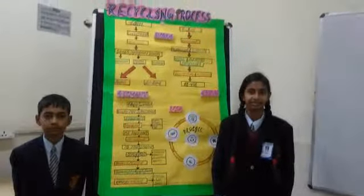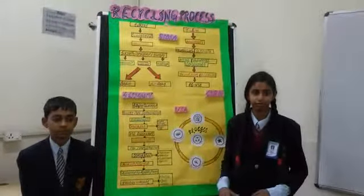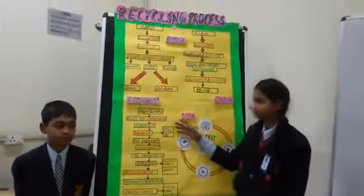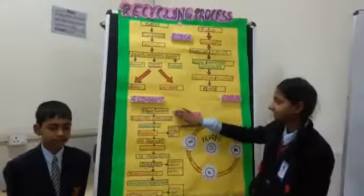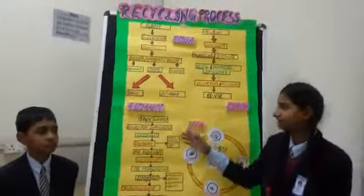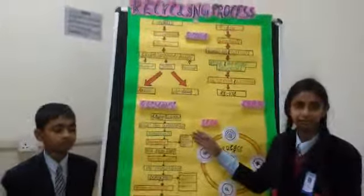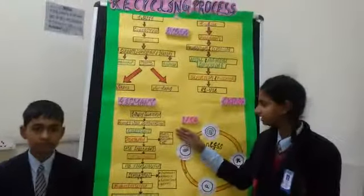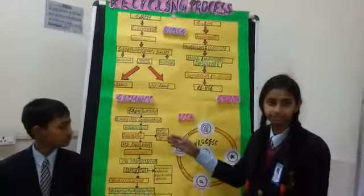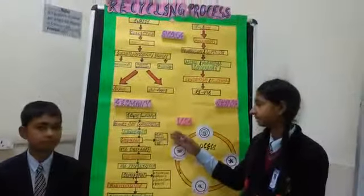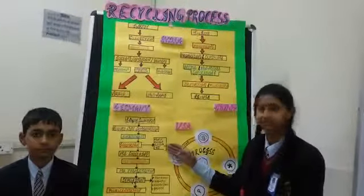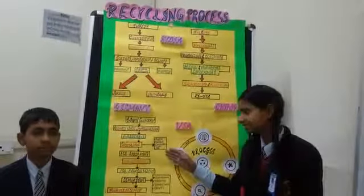I am Ankit Bhati of class 8th and I am going to present the flowchart on Germany. First the e-waste is collected, then the product-wise categorization is done. After that, the assembly and segregation into materials like plastic, metal, cable wires, glass and PVC is done.